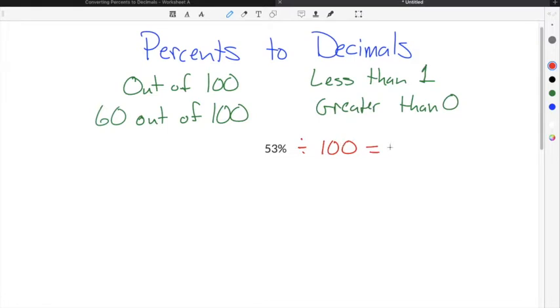53 divided by 100 is going to be 0.53. So 53% as a decimal is 0.53.